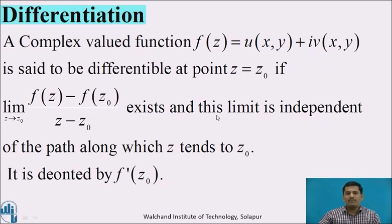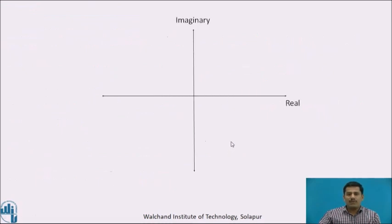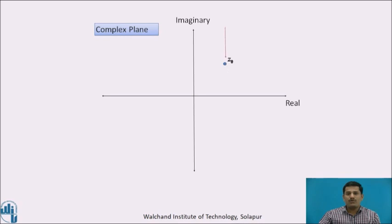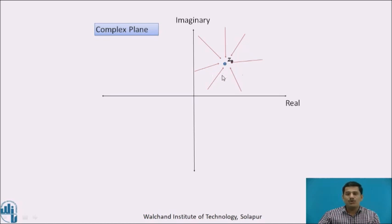This limit is independent of the path along which z tends to z0. Let us consider a complex plane and assume this is a point z0. There are so many ways along which we can approach z0. The meaning of that condition is that if we take the limit along any one of the paths, the limit must be unique. If the limit is not unique along the various paths, we can say the given function is not differentiable at z0.